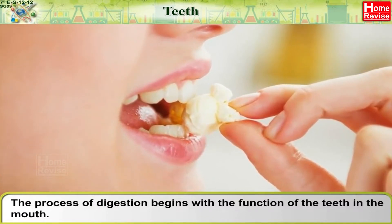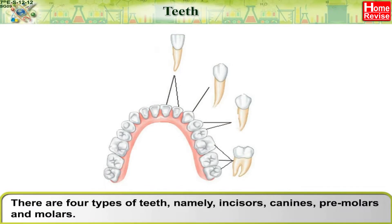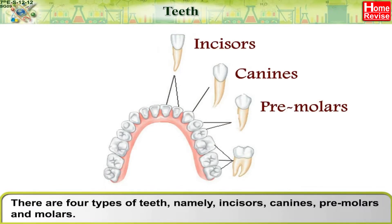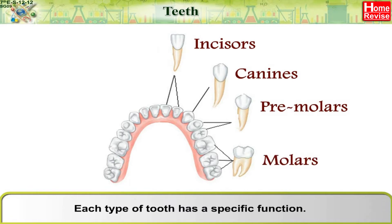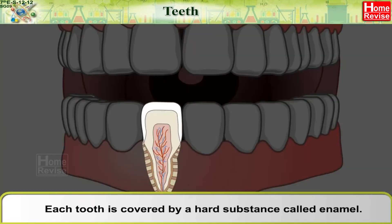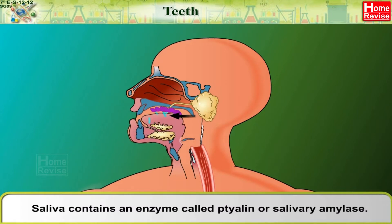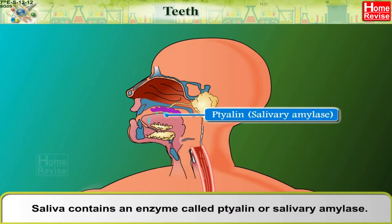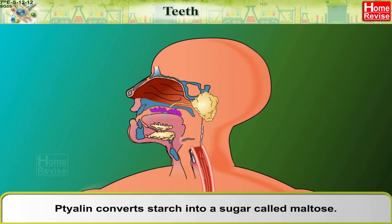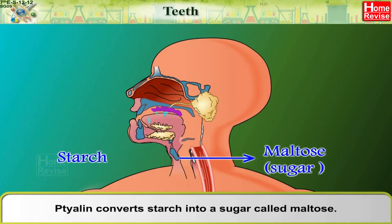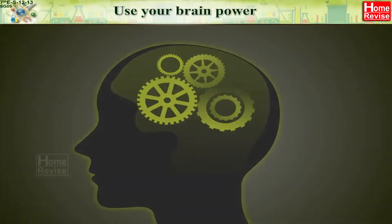Teeth: The process of digestion begins with the functions of the teeth. In the mouth there are four types of teeth — incisors, canines, pre-molars, and molars — each with a specific function. Each tooth is covered by a hard substance called enamel, which is made of a calcium salt. Saliva contains an enzyme called ptyalin, or salivary amylase, which converts starch into a sugar called maltose.